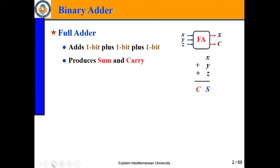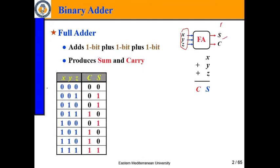Now we have the full adder. While a half adder adds two bits, a full adder adds three bits. Similarly, with three input bits we get a sum bit and a carry output.